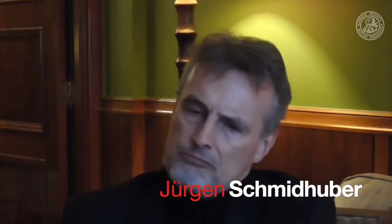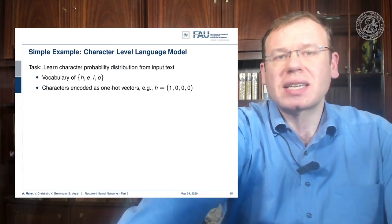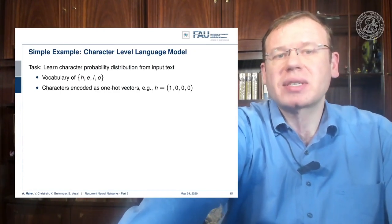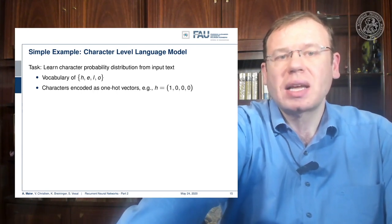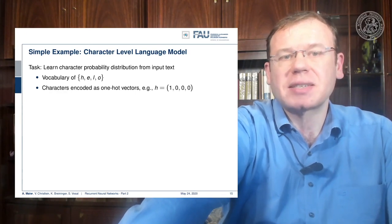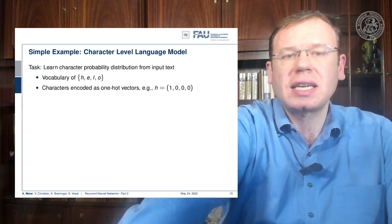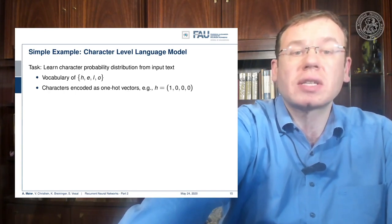Welcome back to deep learning. Today we want to talk a little bit more about recurrent neural networks, and in particular look into the training procedure. Recurrent neural networks can be written down in five lines of pseudocode. So how does RNN training work? Let's look at a simple example and start with a character-level language model, where we want to learn a character probability distribution from an input text. Our vocabulary is going to be the letters h, e, l, and o.